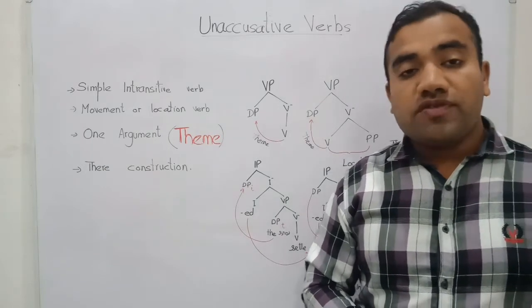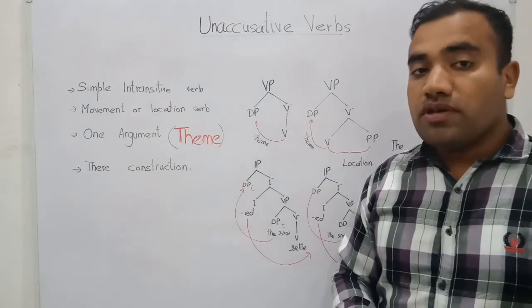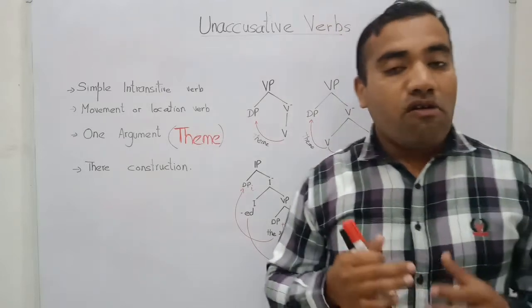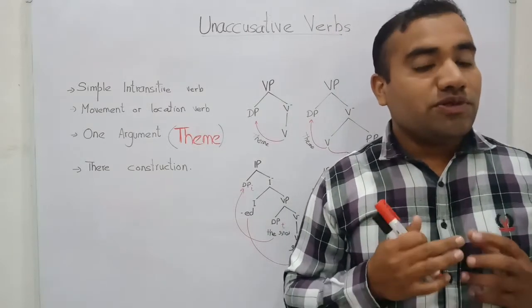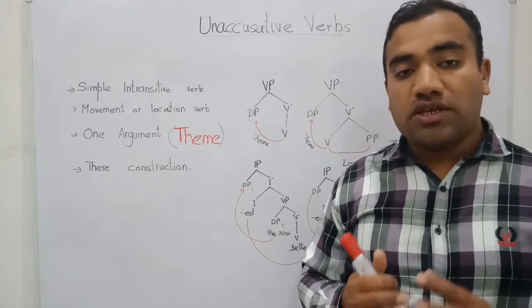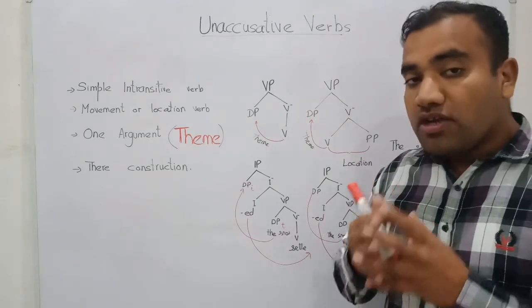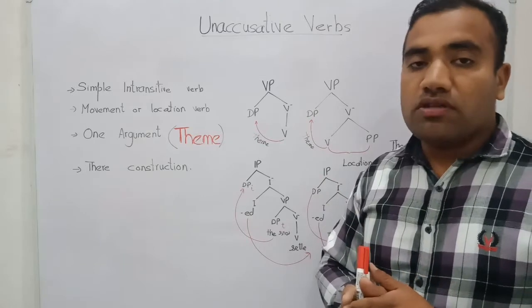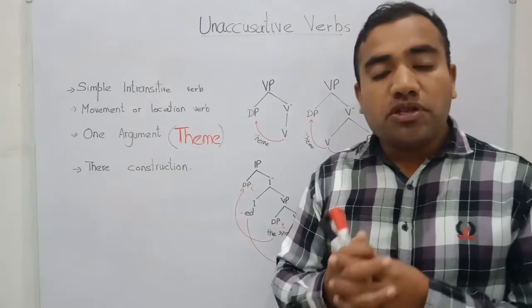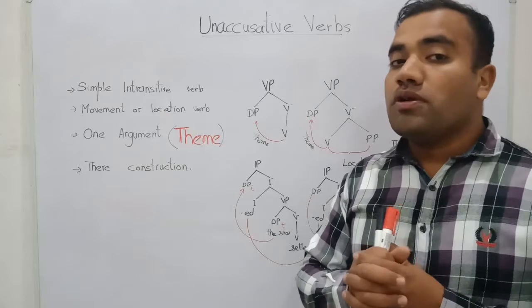Our first type of verb is the unaccusative verb. You should know what unaccusative verbs are. There are certain properties of unaccusative verbs. The very crucial property is that it has a one-argument frame.